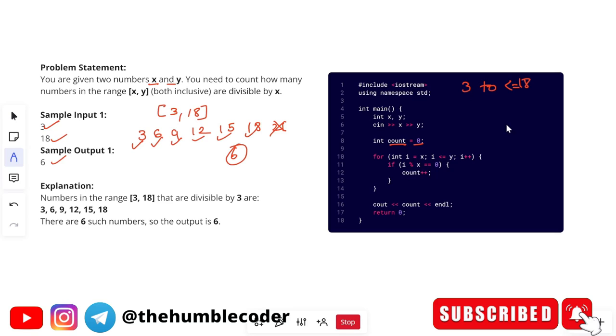For example, initially we will have the number as 3. So we will check if 3 mod 3 is zero. Yes, it is. Count value will be increased to one from zero to one. In the same way, next number that we will have is 4. So for 4, we will check if 4 is divisible by, if 4 mod 3 is equals to zero. No, it is not. So we will not go to if condition and count value will not be incremented.